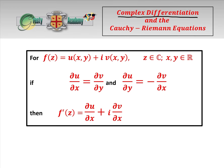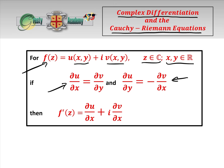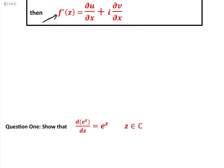Today we're continuing to look at complex differentiation and the Cauchy-Riemann equations. As a quick recap: for f(z) = u(x,y) + iv(x,y), where z is complex and x, y are real, if ∂u/∂x = ∂v/∂y and ∂u/∂y = -∂v/∂x — those are the Cauchy-Riemann equations — then the derivative f'(z) = ∂u/∂x + i·∂v/∂x. We're going to do three questions to reinforce all of this.